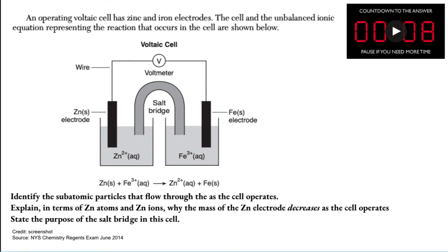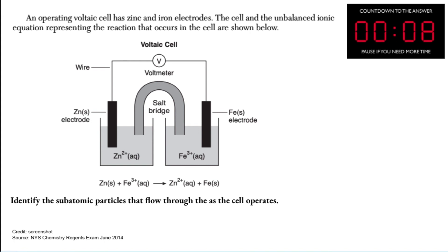So first, the subatomic particle that flows through as the cell operates, that should be electrons, right? Electrons flow through the cell. That's what's going through the wire. That's how redox reactions occur, the transfer of electrons.